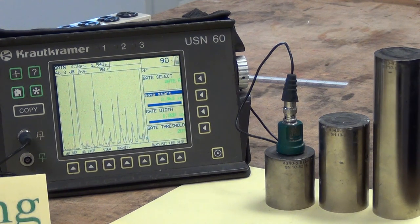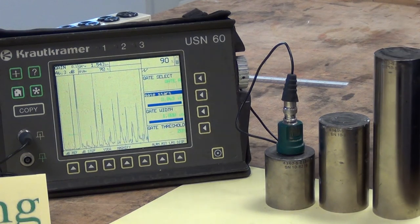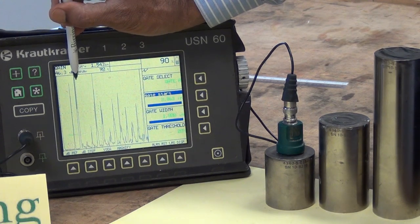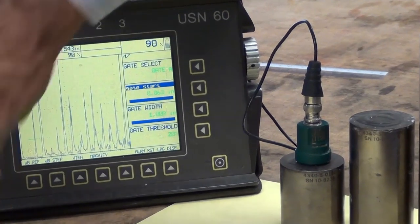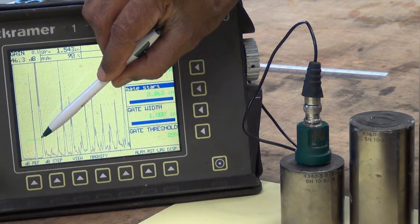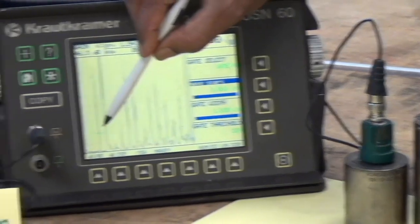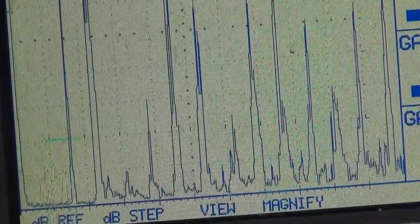First, I place the transducer on the block which is the smallest one, 1.5 inches. Here we see the signal from the flat bottom hole and the signal from the bottom of the block. We set the gate exactly on the signal from the flat bottom hole. The gate is in green color, and the signal is here.